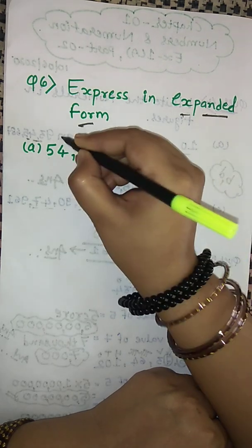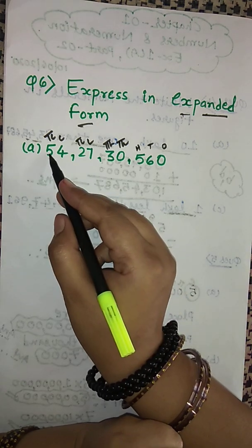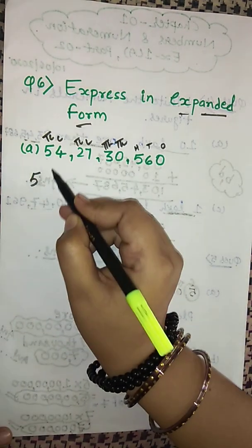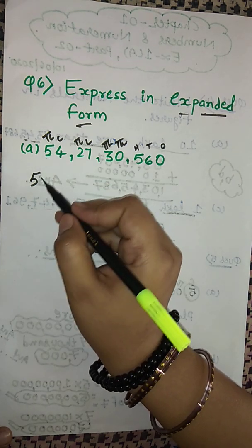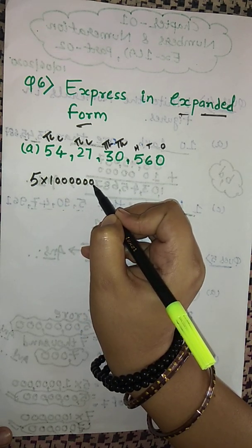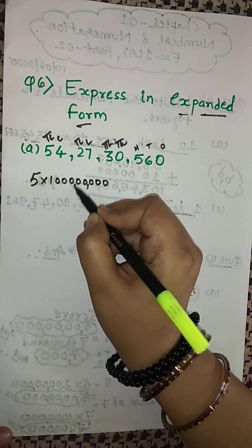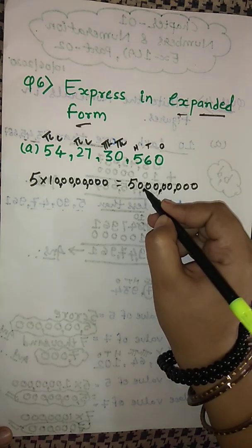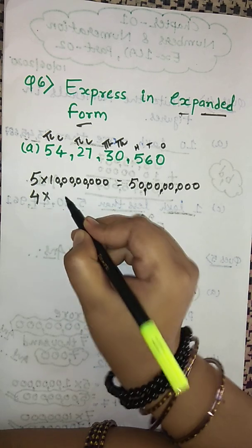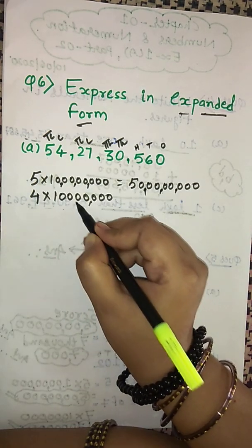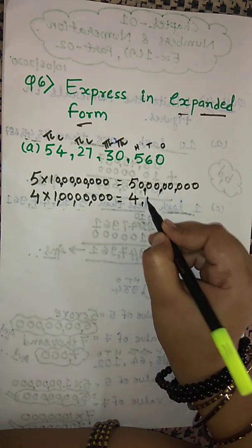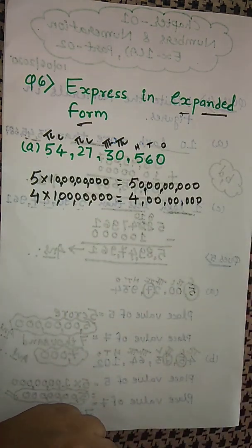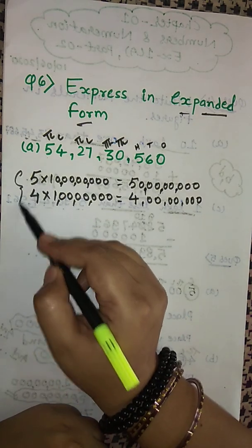Let's write the place value columns: ones, tens, hundreds, thousands, ten thousands, lakhs, ten lakhs, crores, ten crores. Now write each digit along with its place value. Five is situated at the ten crores place, so 5 × 10 crores = fifty crores. Four is situated at the crores place, so 4 × 1 crore = four crores.